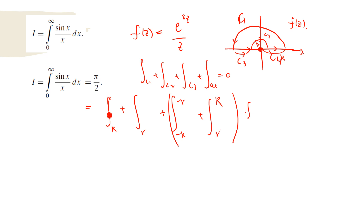So f of z is 0. So if we take R goes to infinity and the limit small r goes to 0, then these two terms will become the integral from negative infinity to infinity.